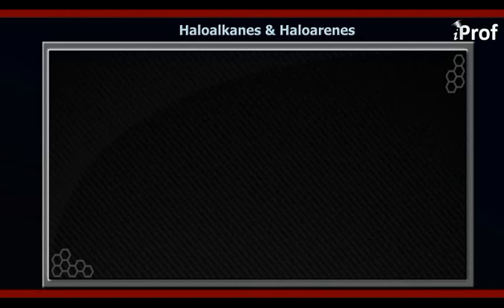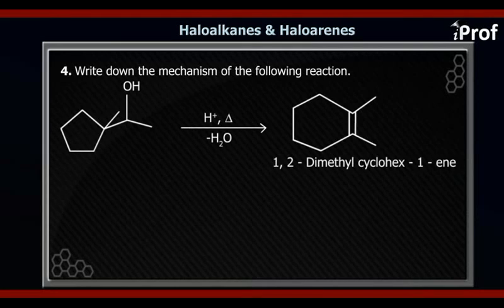The next question we have is one in which we have a five-membered ring and a methyl group on one of the carbons. On that same carbon, we have CHOHCH3. H+ is given and we are heating it.